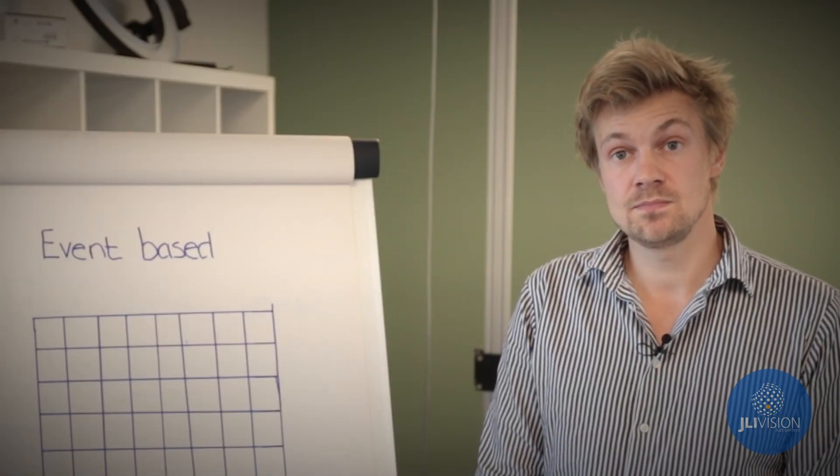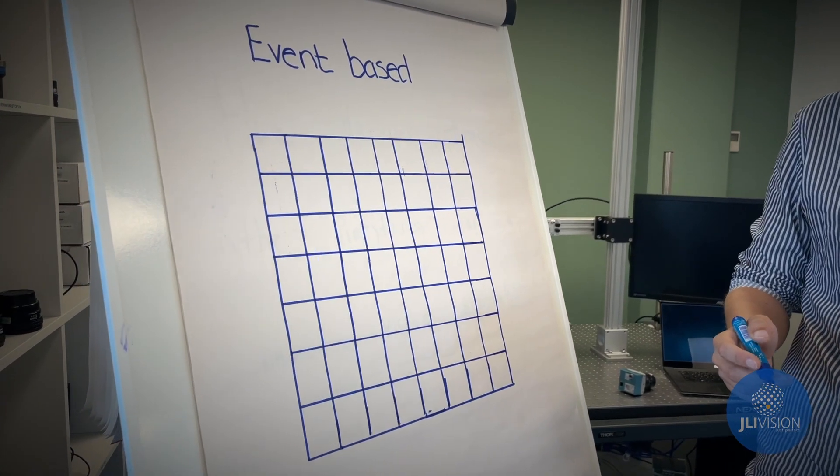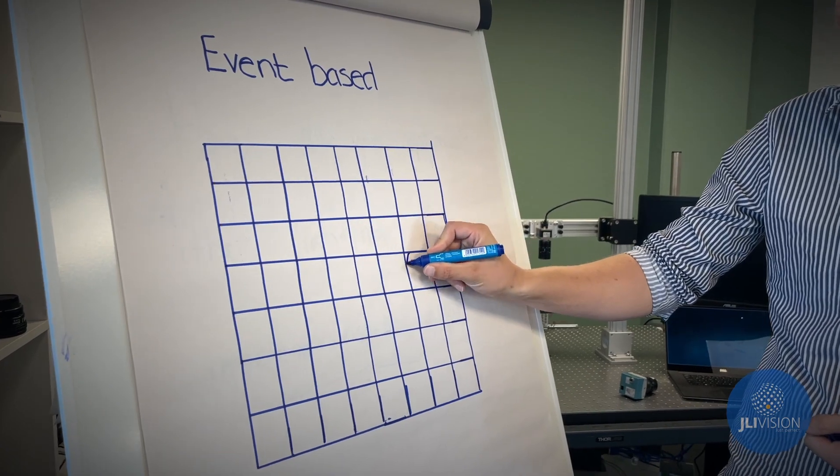With an event-based system each pixel works independently. Information is only transferred if intensity changes within one pixel.